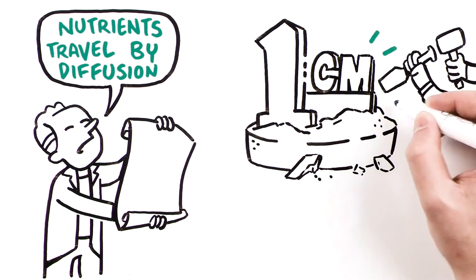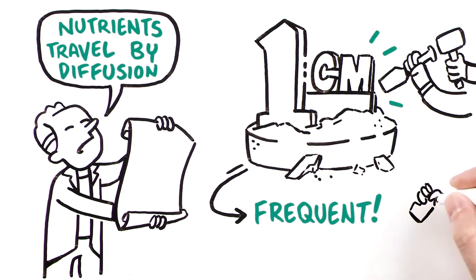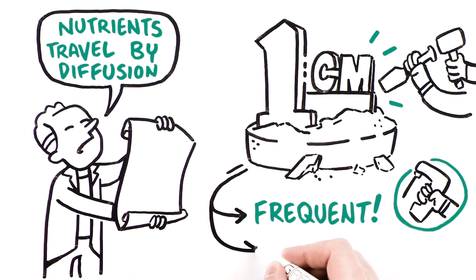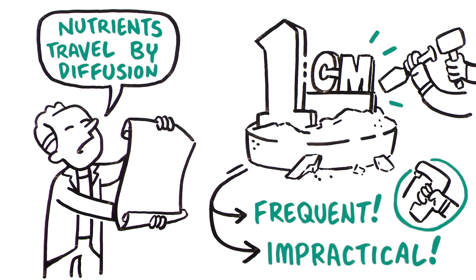The resultant one centimeter media height limit necessitates frequent interventions for feeding and results in a cell production process that is impractical for clinical manufacturing.